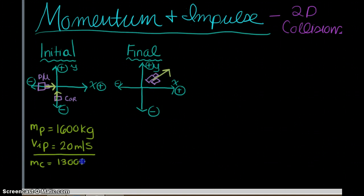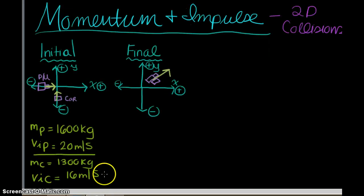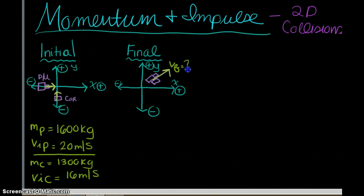The mass of the car is 1300 kilograms, and its initial velocity is positive 16 meters per second. Unfortunately, these two vehicles engage in a collision and they remain tangled together. We're going to determine the velocity — magnitude and direction — of this combined wreck immediately after the collision. That final vector is what you see right over here.